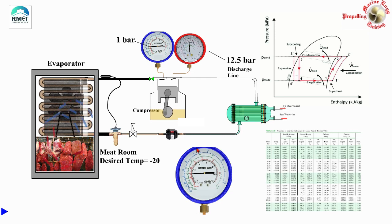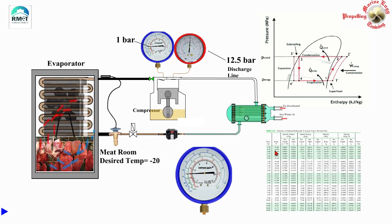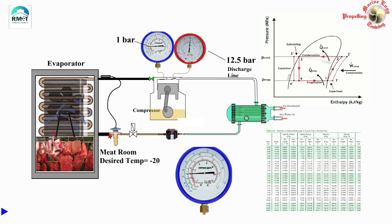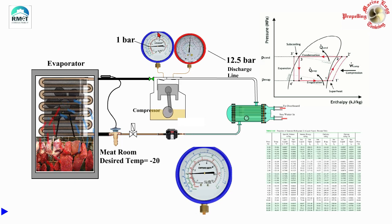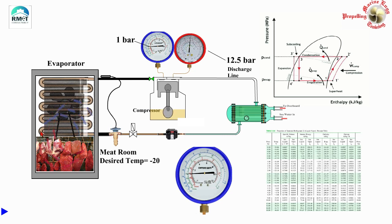In the previous videos we saw the basics of the refrigeration system and how to read the saturation pressure and temperature table. We also learned that if the desired cold room temperature should be minus 20, then the liquid freon after crossing the expansion valve will drop its temperature down to almost minus 25, and to a corresponding saturation pressure of 1 bar, which can be read on the suction gauge. This liquid freon at minus 25 travels up the evaporator, gradually changing its state to refrigerant gas, thereby absorbing the heat from the meat room.